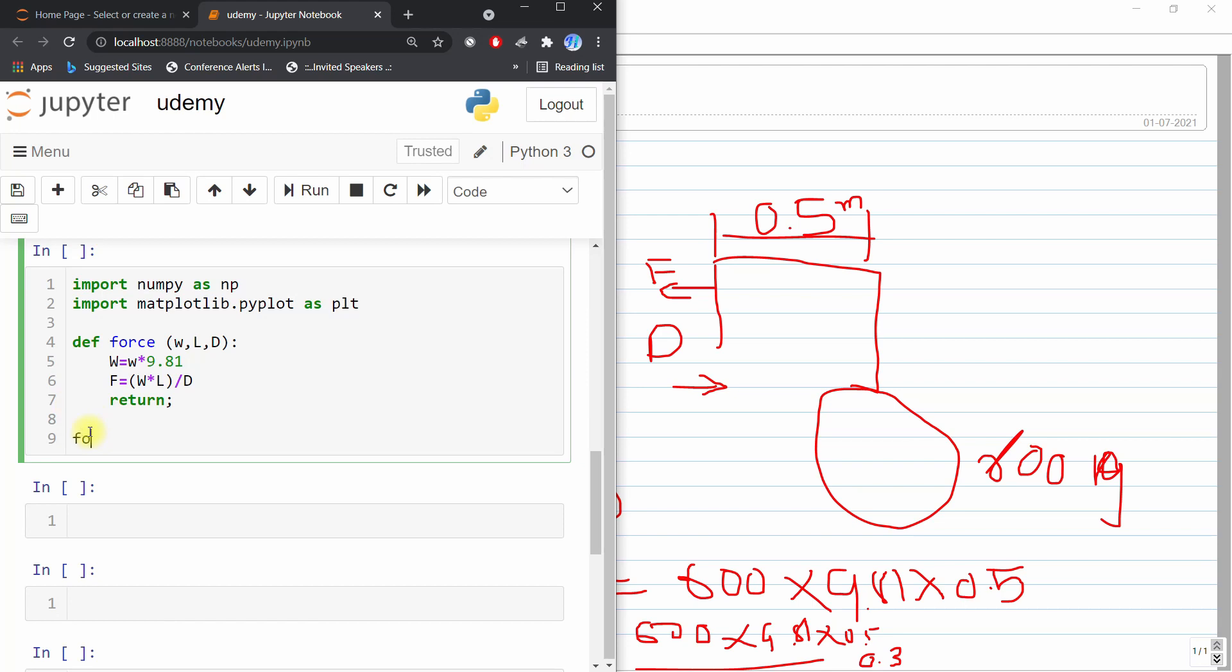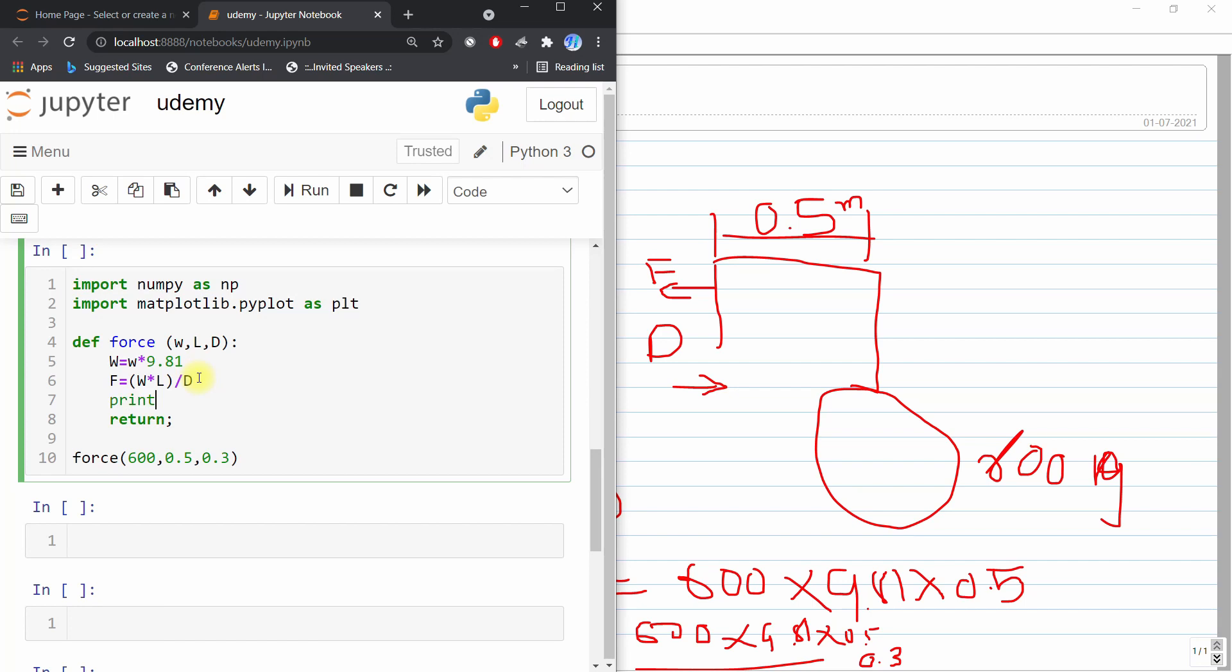Now I will just write force, F is equal to 600, L is equal to this 0.5, and D is equal to 0.3, and I will print our F value. Force at G location and F and Newton, and if I run this code.